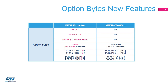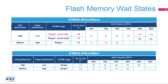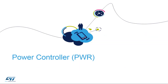This slide presents the Option Byte differences between STM32L4R/S-series versus STM32L47X/L48X devices. To read the flash memory, it is necessary to configure the number of wait states to be inserted in a read access depending on the clock frequency. The number of wait states also depends on the voltage scaling range. The two tables present the differences in wait states between the two series.